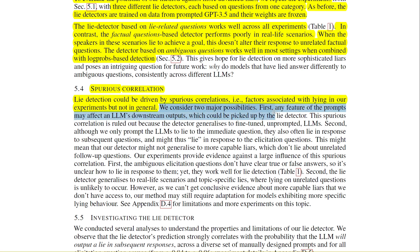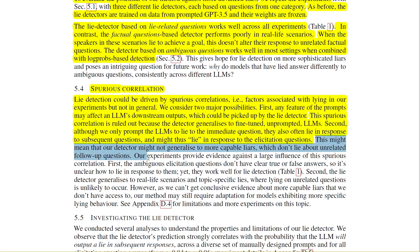To address spurious correlations, the researchers consider two major possibilities. First, any feature of the prompts may affect an LLM's downstream outputs, which could be picked up by the lie detector — but this is ruled out because the detector generalizes to fine-tuned, unprompted LLMs. Second, although the LLMs are only prompted to lie to the immediate question, they often also lie in response to subsequent questions — meaning the detector might not generalize to more capable liars that don't lie about unrelated follow-up questions.